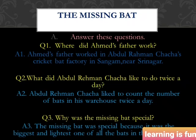The answer to the second question is: Abdulrahman's cha-cha liked to count the number of bats in his warehouse twice a day. The third question is: why was the missing bat special? The missing bat was special because it was the biggest and lightest one of all the bats in the warehouse.